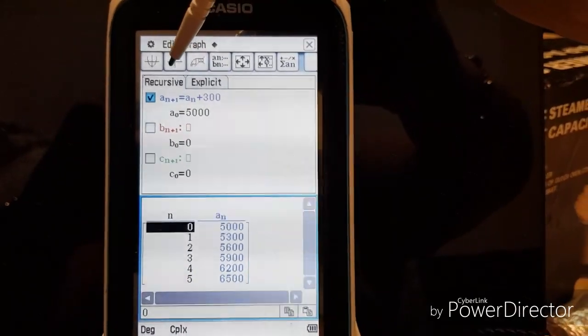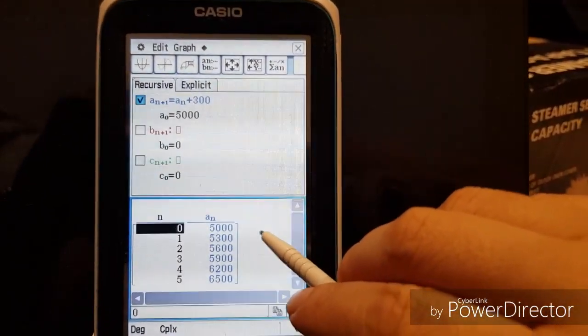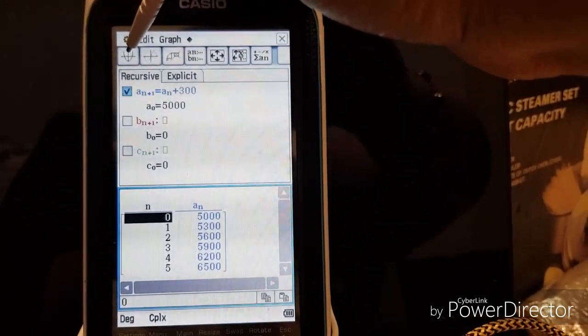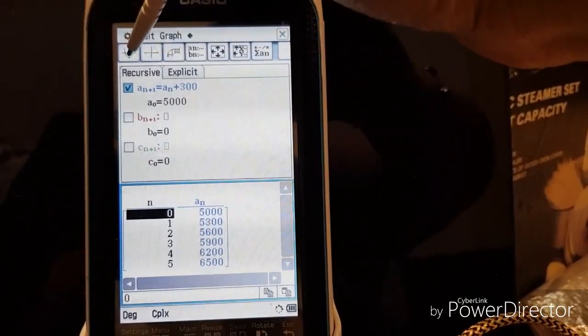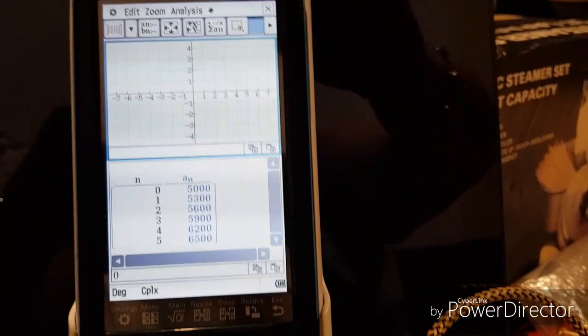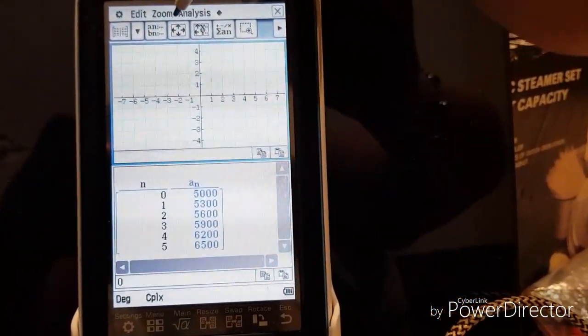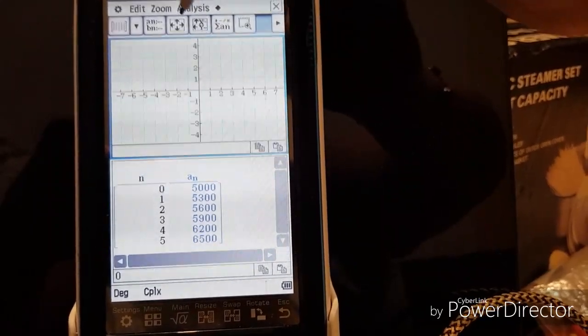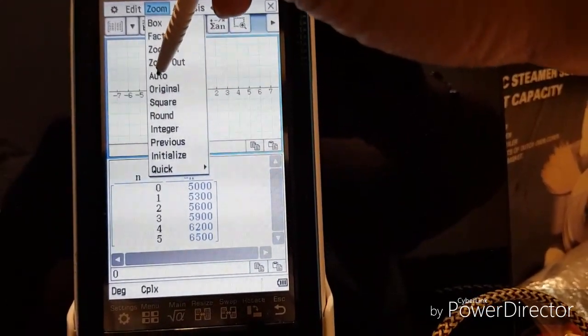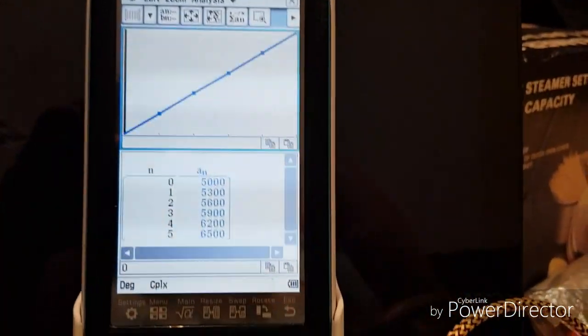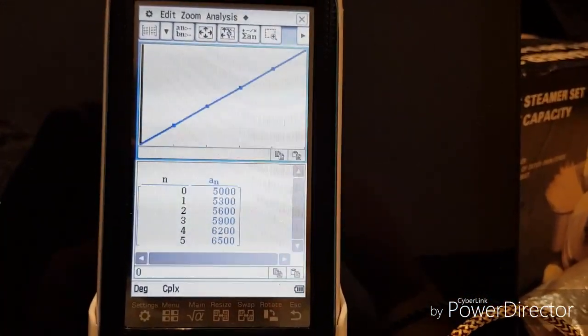So let's go back to sequence. Now tap into this area and you'll see that these graph icons appear. Click on the graph icon. Okay, and you'll see that at the moment there's nothing there. Well, it's because we're not in the right viewing window. So go to zoom and click auto. It will change the viewing window so that you can actually see the data.